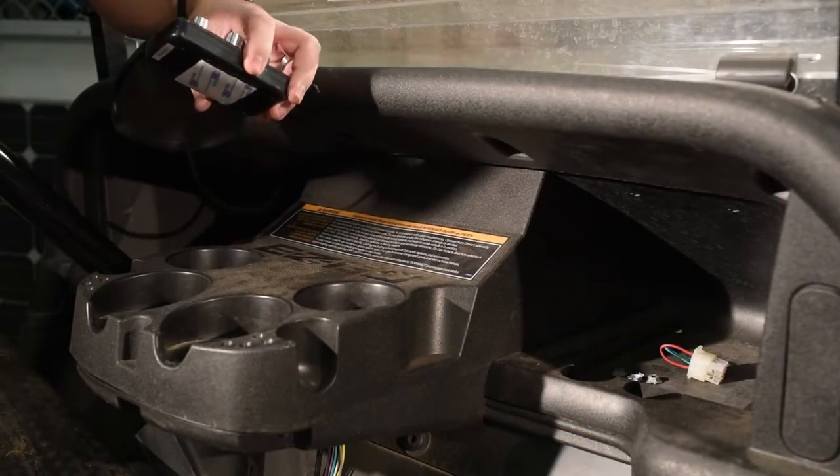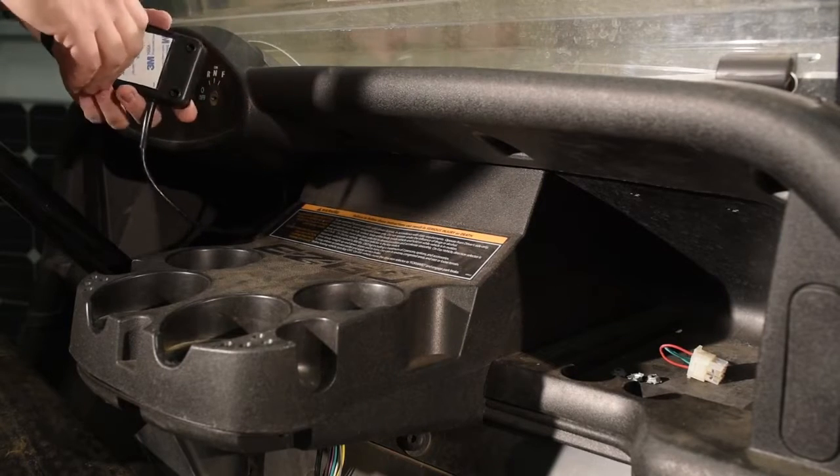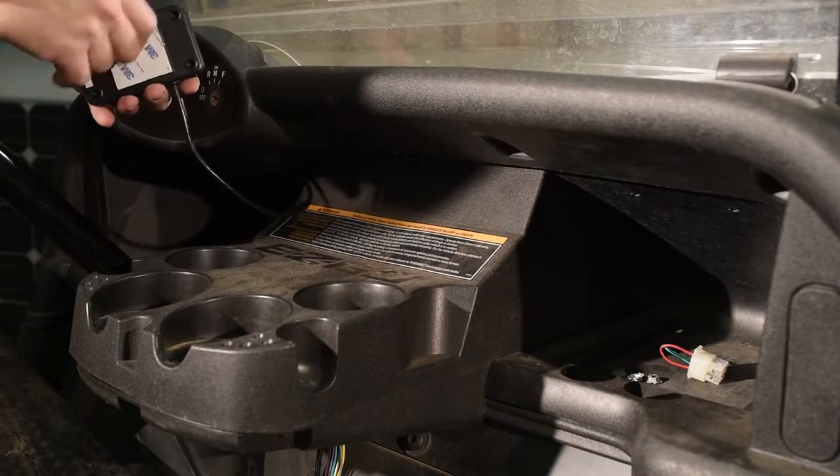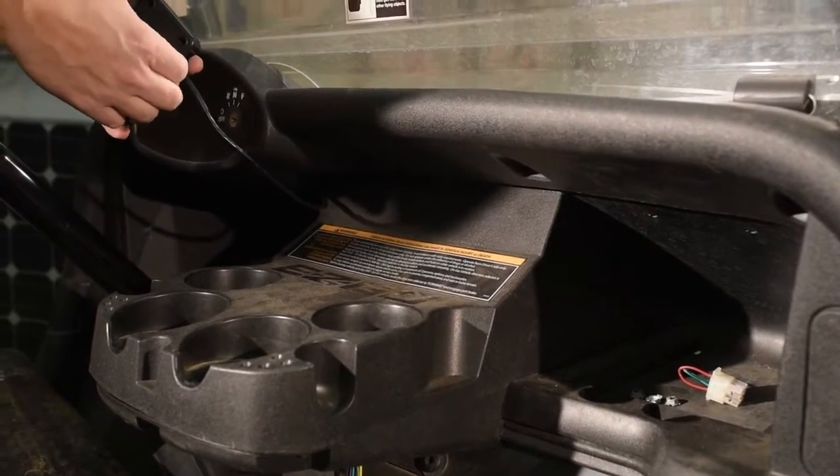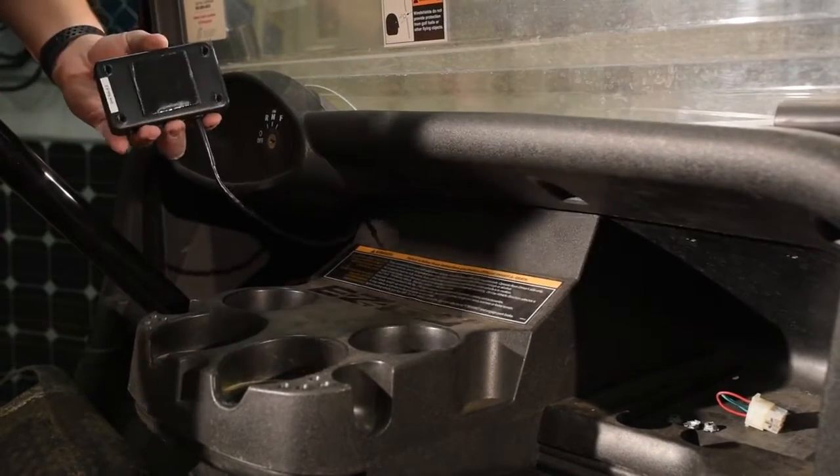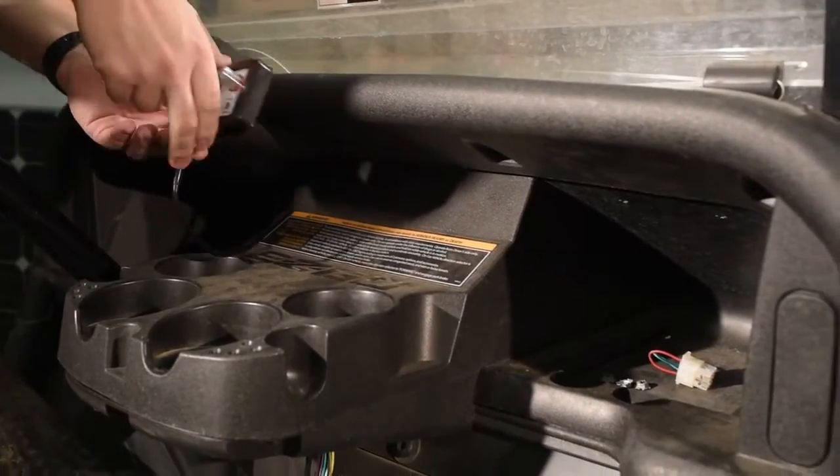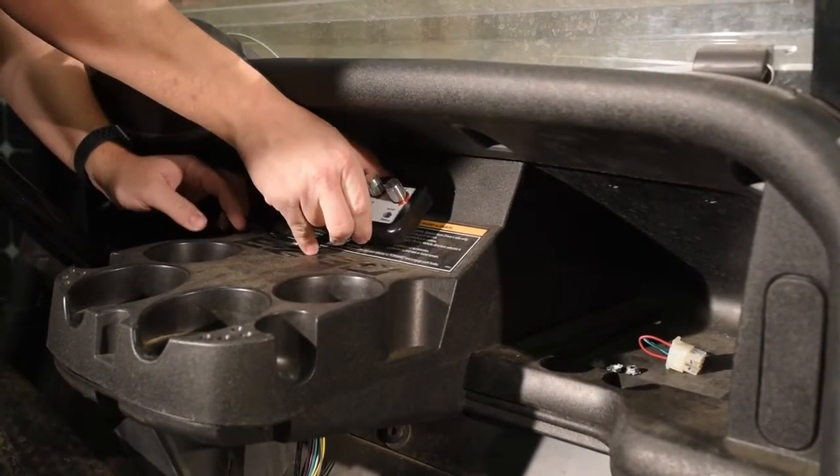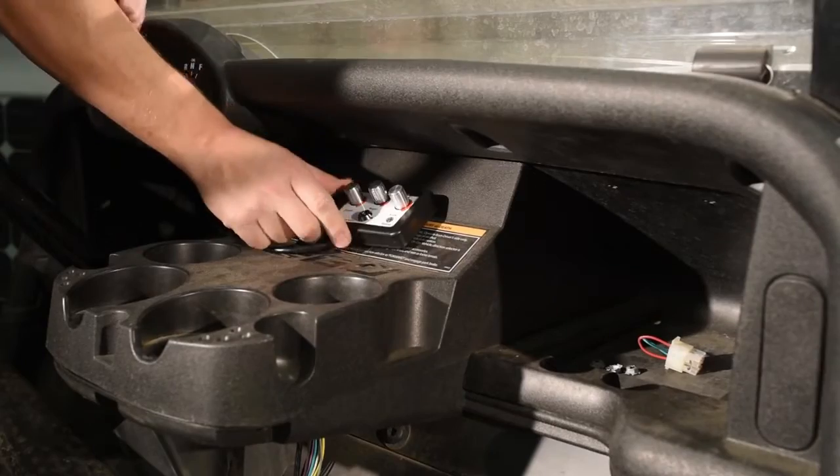Mount the on-the-fly programmer onto the vehicle. On the back there is a Velcro tab. Peel the backing off of it and place it onto the front dash.